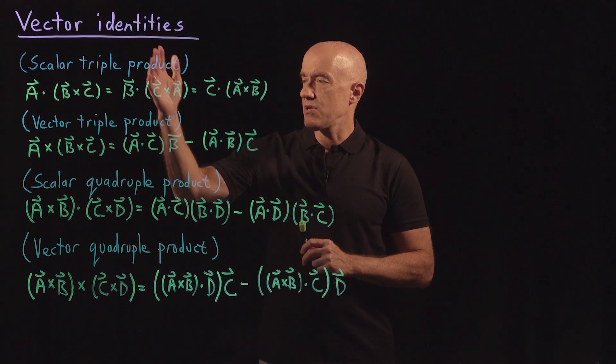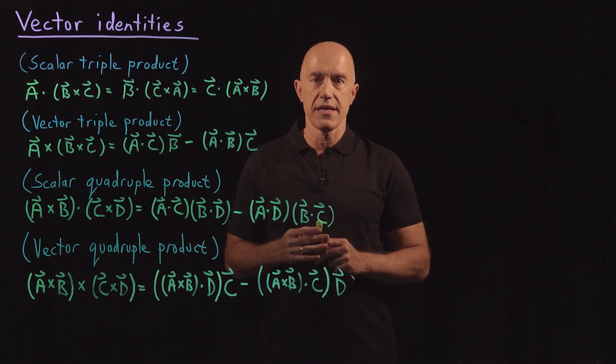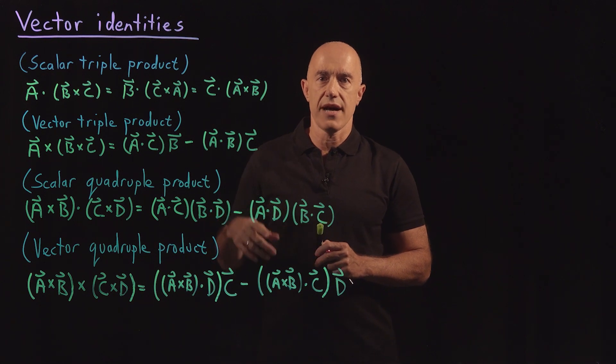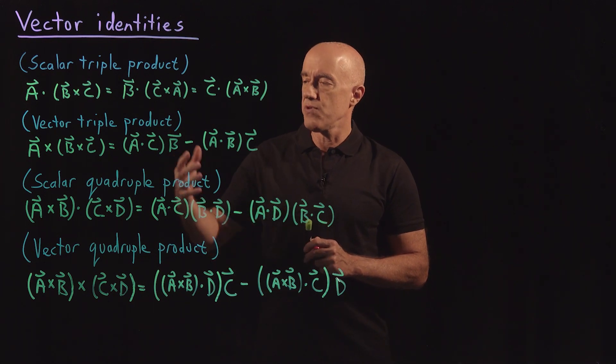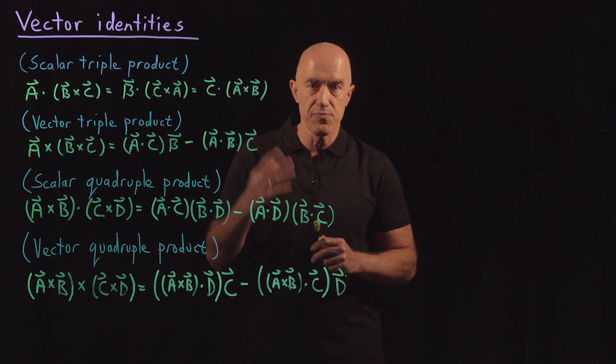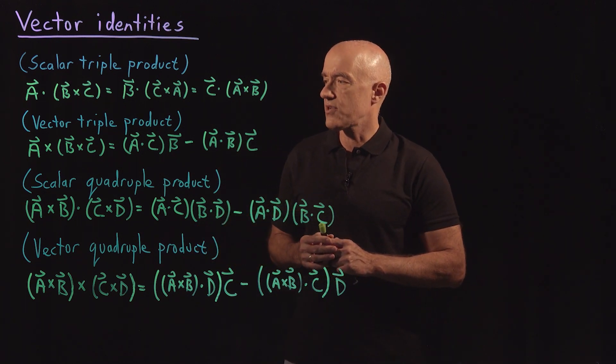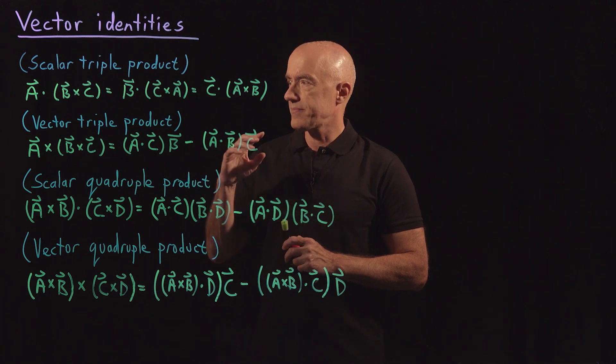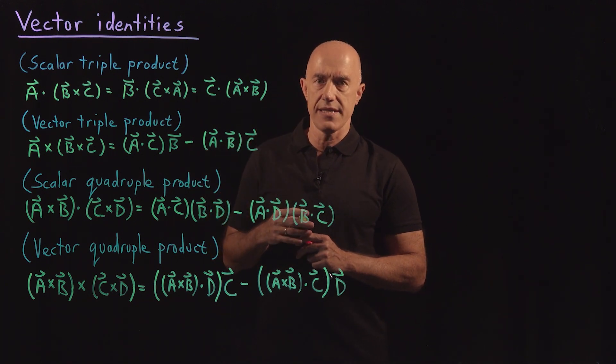So I'm going to talk about four vector identities. In the lectures I'll derive, I'll prove two of them and then ask you to do two of them as problems. So let's go through them.